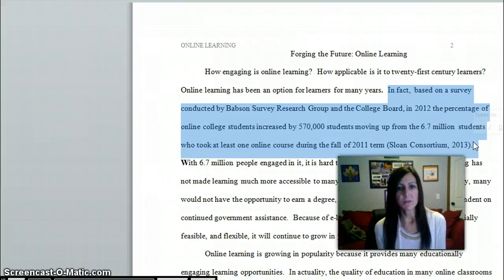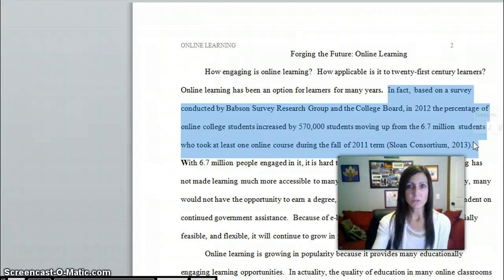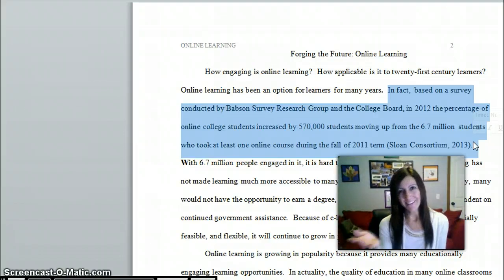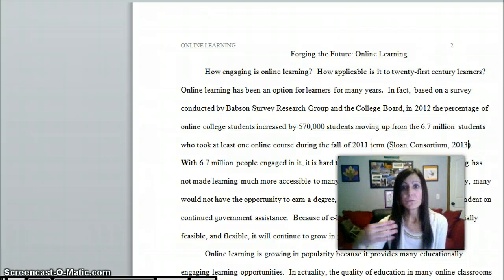In fact, based on a survey conducted by Babson Survey Research Group and the College Board in 2012, the percentage of online college students increased by 570,000 students moving up from 6.7 million students. Here's a bit of factual information that I found in a credible source and I wanted to include it in my essay because it helps establish my argument that online learning is the best way to learn. It's information from a credible source that I've summarized in my own words, and then I have to give a shout out to the actual author.